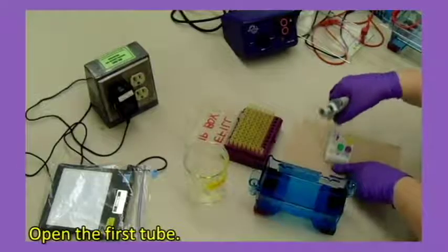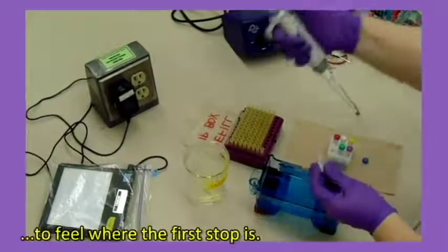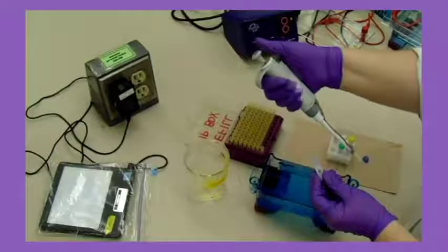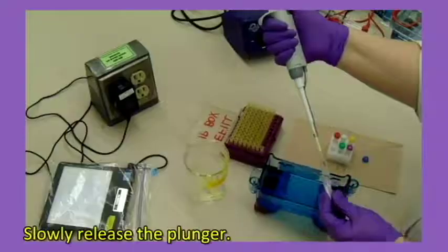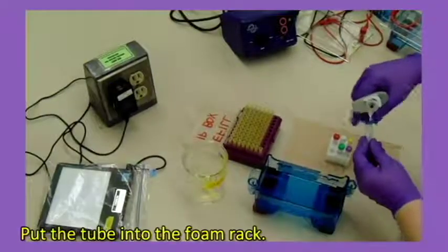Put a yellow tip on the micropipette. Open the first tube. Press the plunger down a few times to feel where the first stop is. Press down to the first stop and hold. Place the tip into the DNA. Slowly release the plunger. Put the tube into the foam rack.